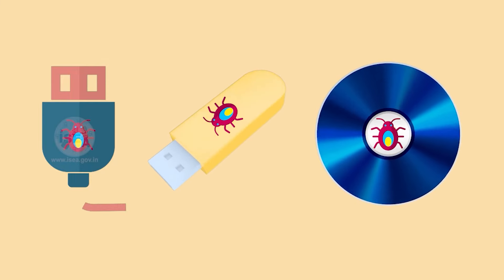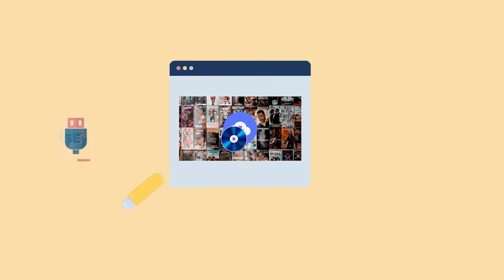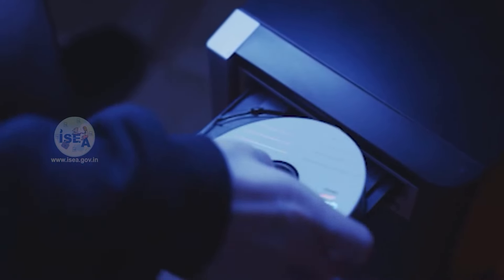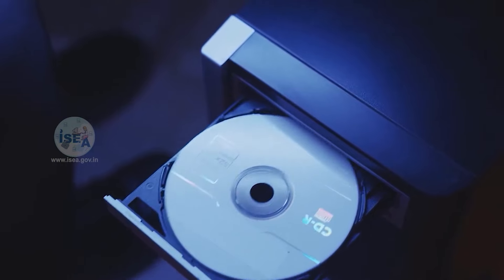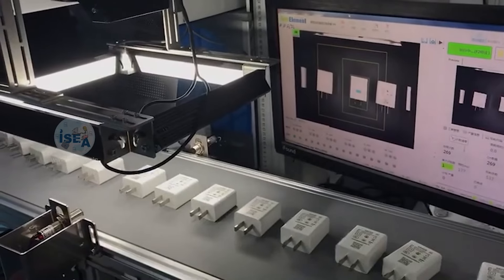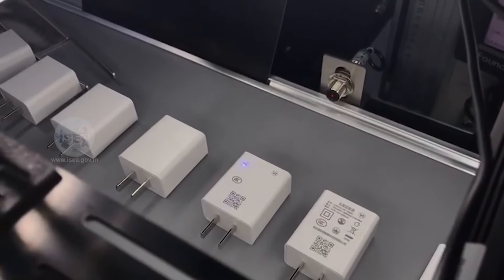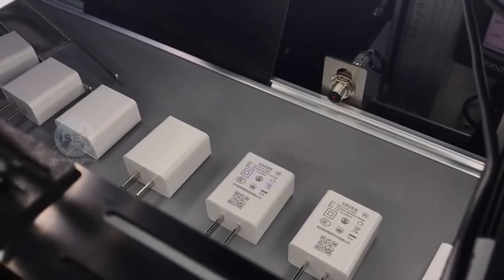The bait can also come through free movie downloads that are actually malware in disguise. Additionally, the fraudster may label these physical media devices with popular company logos to make them look authentic.